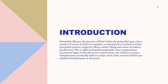As this fluid accumulates, there will be a critical point where the pericardial pressure will negatively affect cardiac filling and cause circulatory insufficiency. This specific critical point is called pericardial tamponade. Once the compensatory mechanisms begin to fail, obstructive shock ensues and failure to restore hemodynamics eventually leads to cardiac arrest. Only removal of fluid can stabilize the hemodynamics at this point, and the procedure by which we remove the fluid is pericardiocentesis.